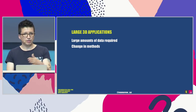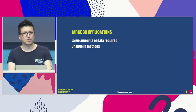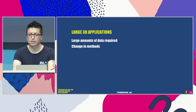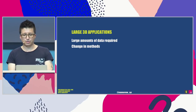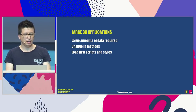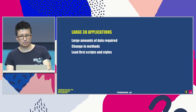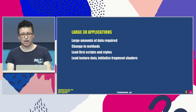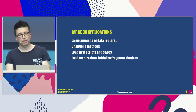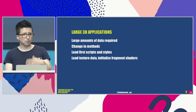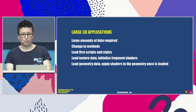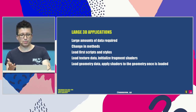Generally speaking, the advice for loading large applications is: reduce server calls when loading scripts and assets as much as possible. Load scripts and styles first, then the textures. I like to initialise the fragment shaders right after finishing loading the textures and creating the materials, and then load the geometry data, initialise the shaders, and wrap those geometries with the fragment shaders previously created.